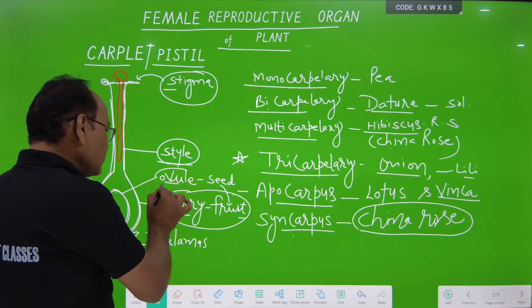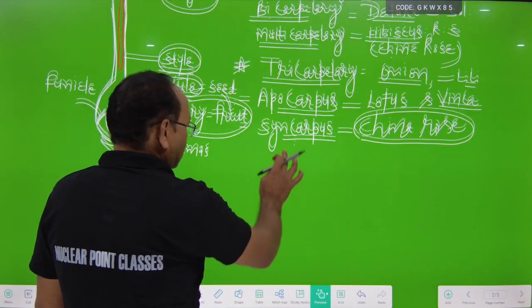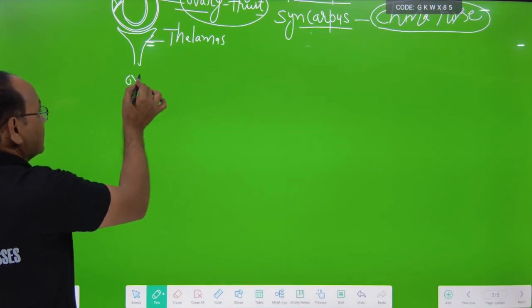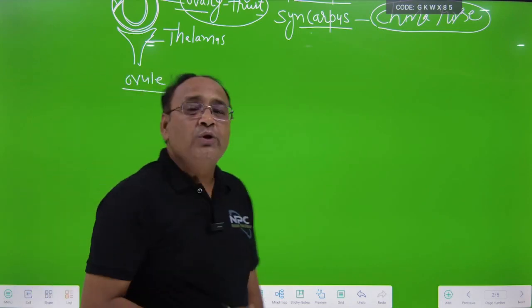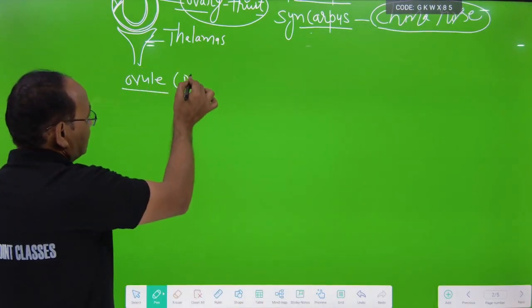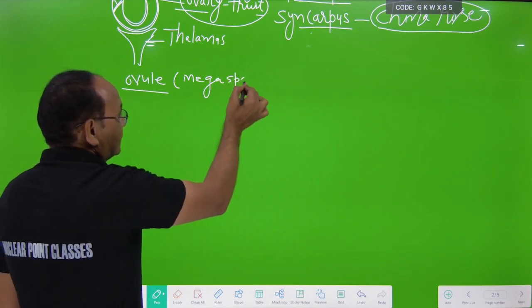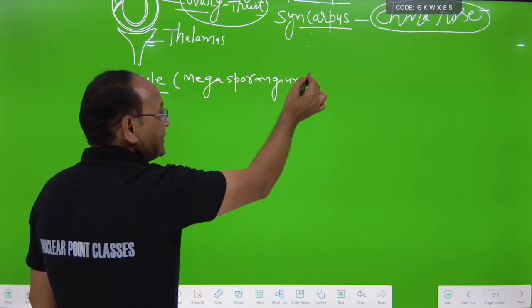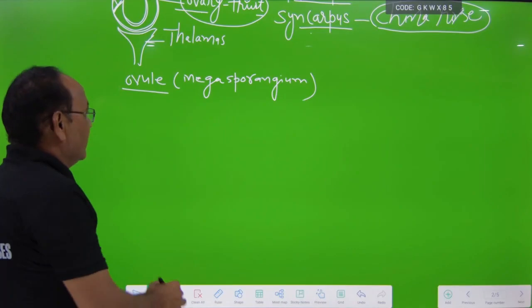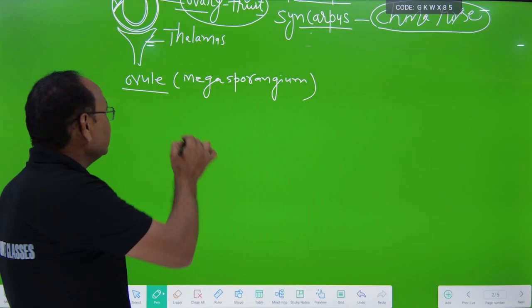Now we discuss about the ovule. What is ovule? The next point is ovule. Simply, ovule is also known as megasporangium. The ovule contains many parts, so we will discuss the parts of the ovule.